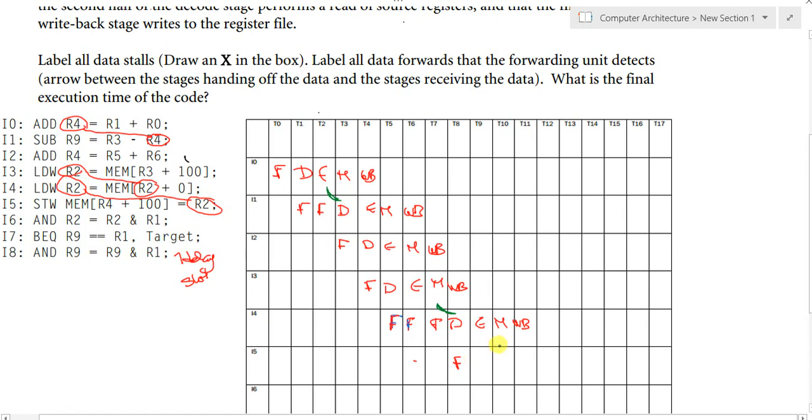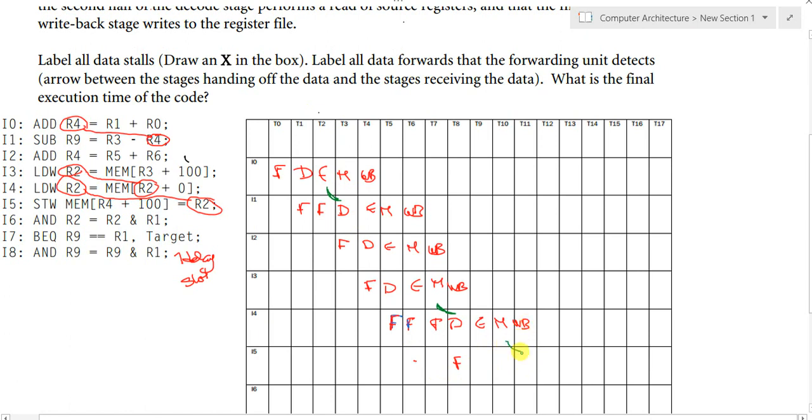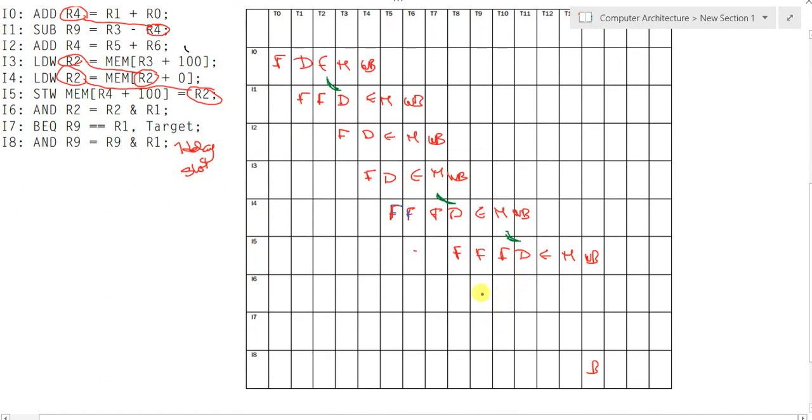So we have to stay stalling until the value is bypassed from the memory here. So I5, we'll start fetch, fetch, fetch, decode, execute, memory, and write back. Getting to instruction 6. In instruction 6, we cannot start here, so we'll start here. So we're starting from fetch, decode, execute, memory, and write back.